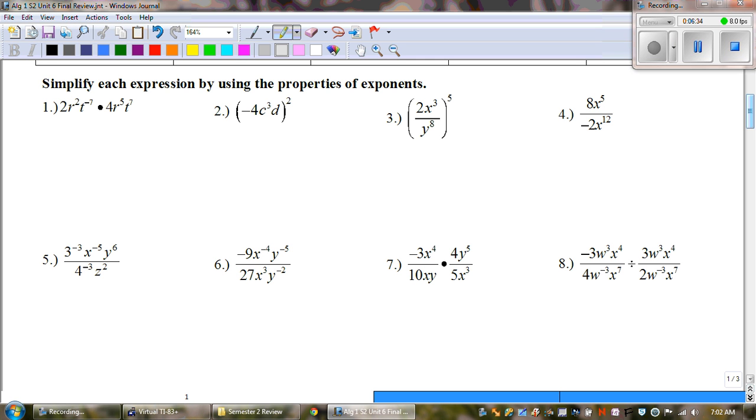2r squared t to the negative 7th times 4r to the 5th t to the 7th. Now there's a bunch of things that you could do. You could start dropping the negative exponents. You could combine them right away. Multiply. What we like to do is we're going to multiply and combine things first and then move any negative exponents.